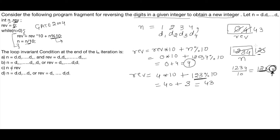n becomes 12.3, and because n is an integer variable, only 12 is stored. Now the question does not ask for the complete final value — it asks for the loop invariant condition at the end of the ith iteration. We need to tell what will be stored at location REV and what will be stored in integer n after the ith iteration.